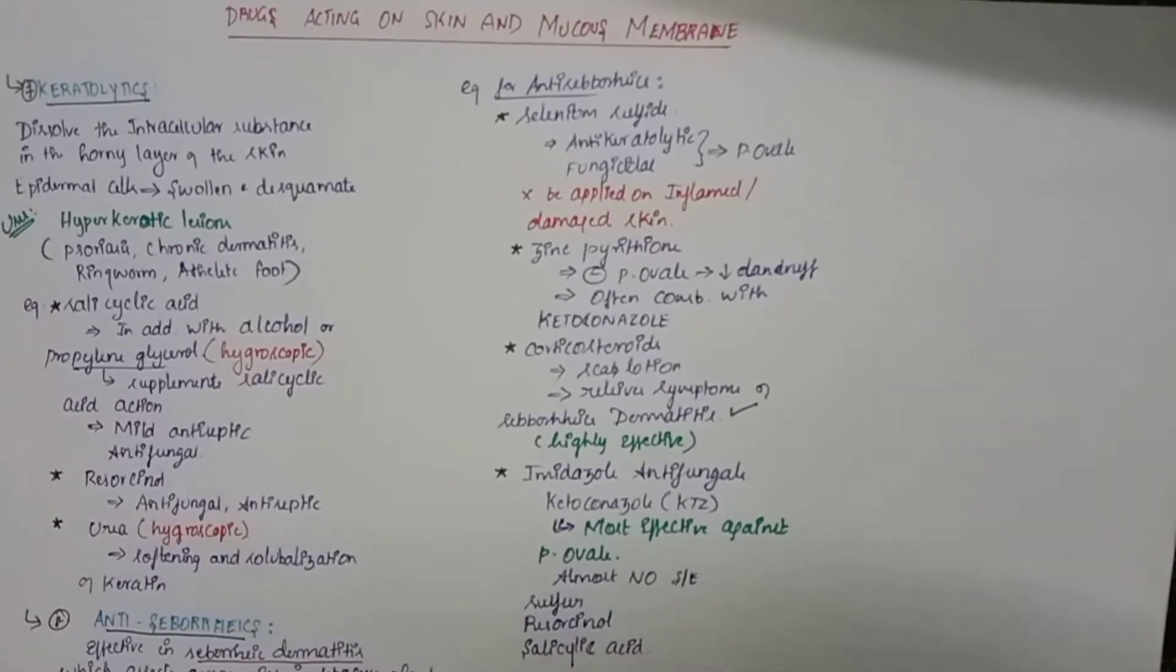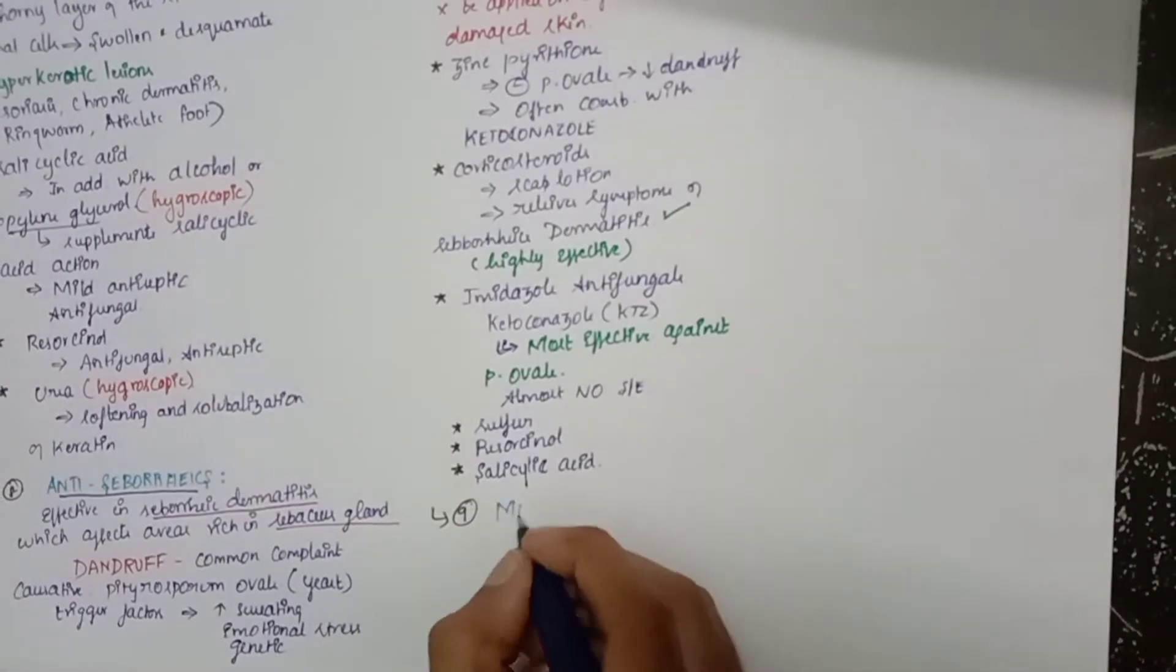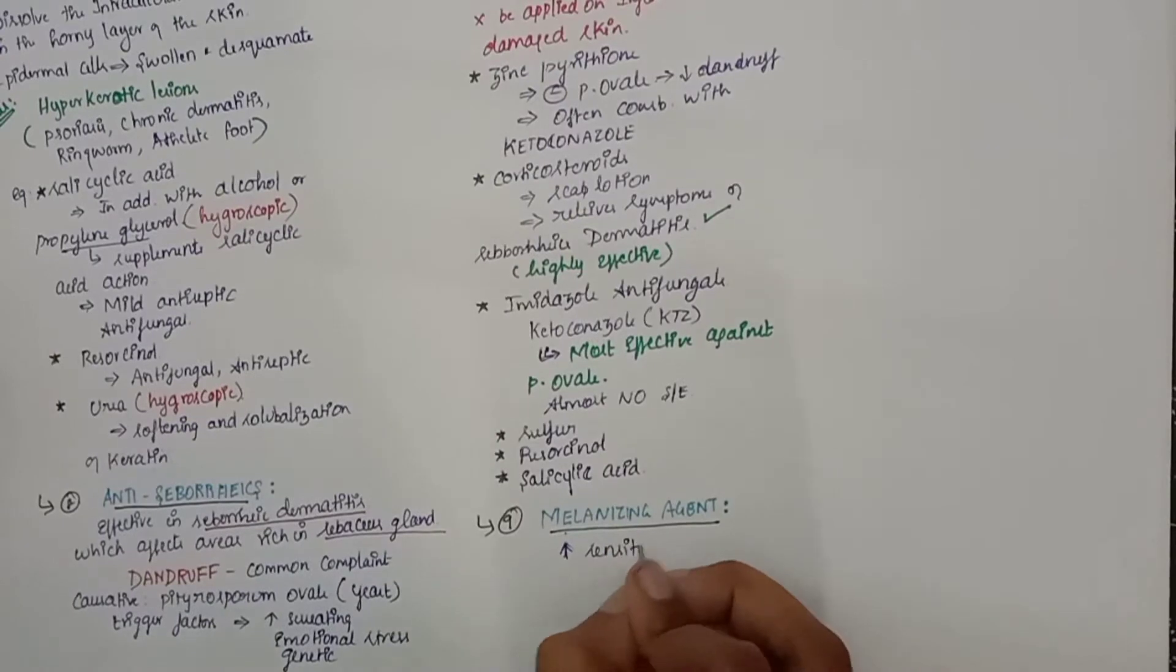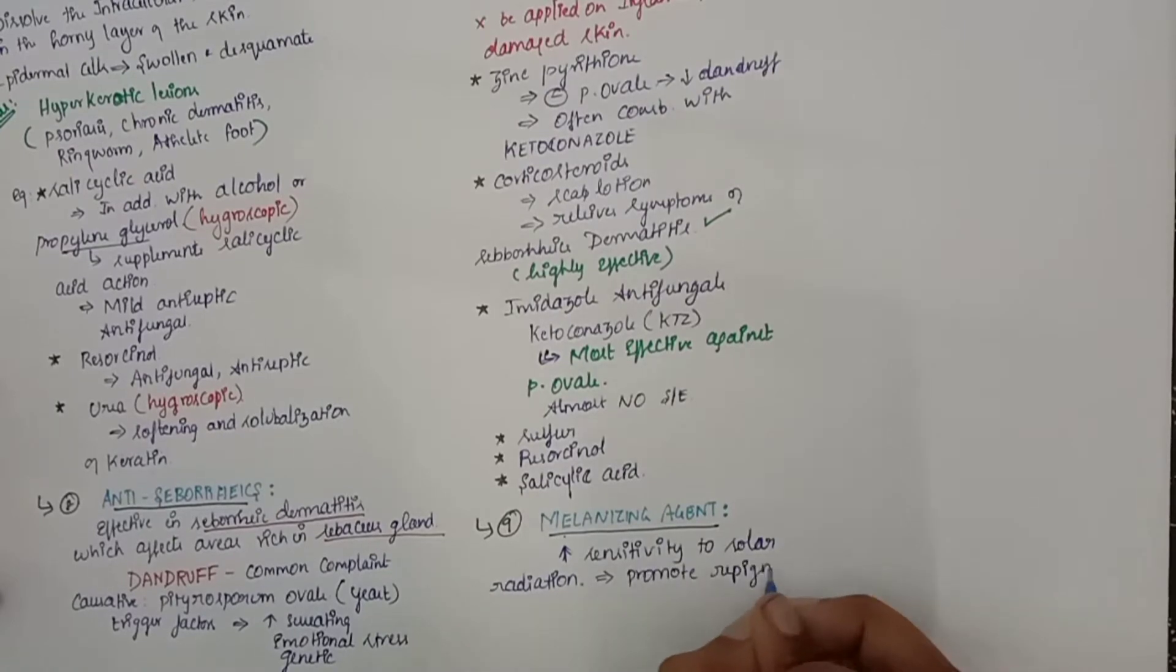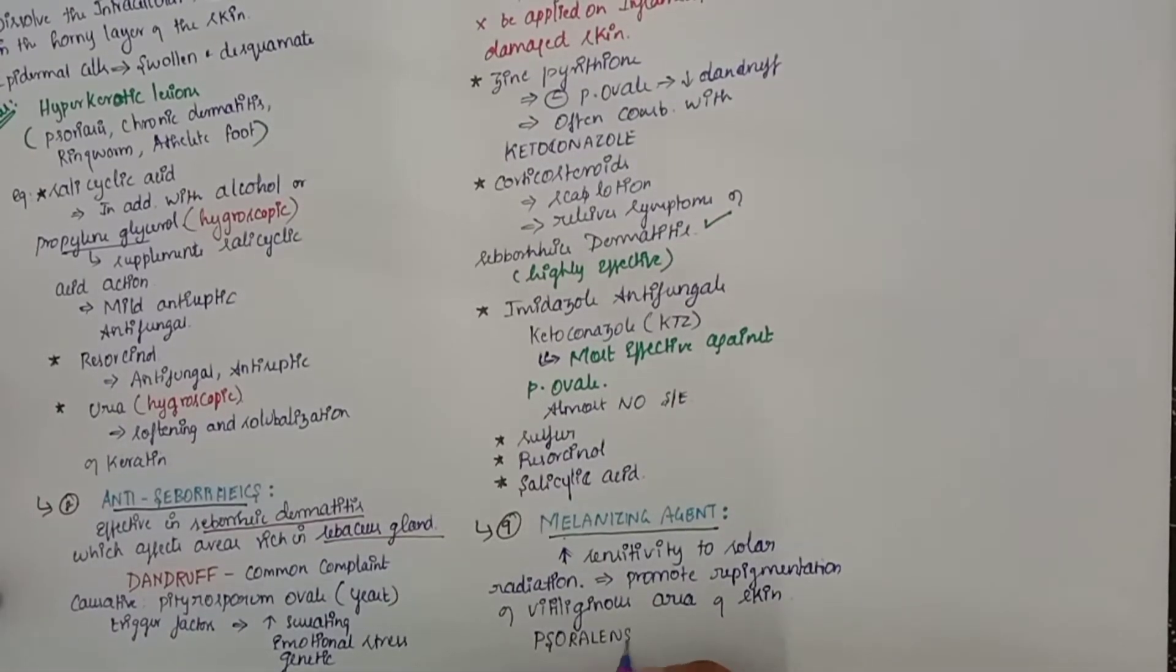Other drugs are sulfur, resorcinol, and salicylic acid. The next group of drug is melanizing agents. These melanizing agents are drugs that increase sensitivity to solar radiation and thus promote the repigmentation of vitiliginous areas of skin. Vitiliginous area means the area where there is lack of melanocytes.